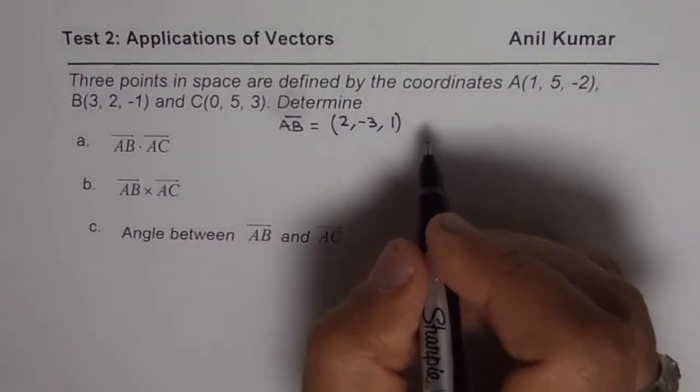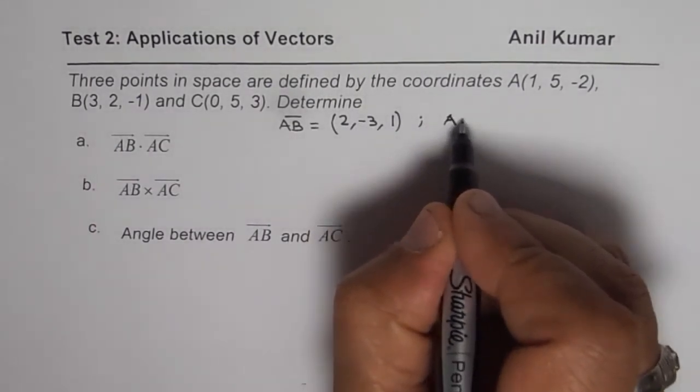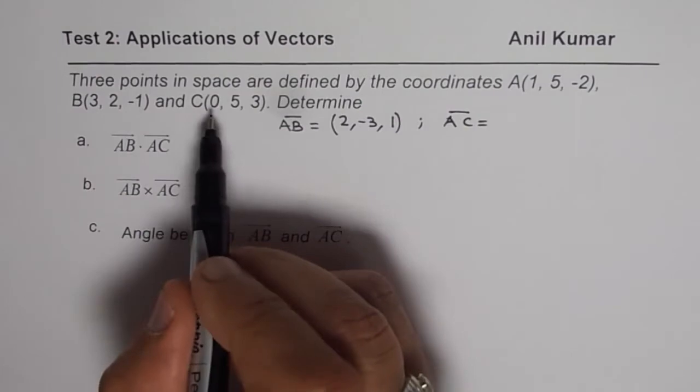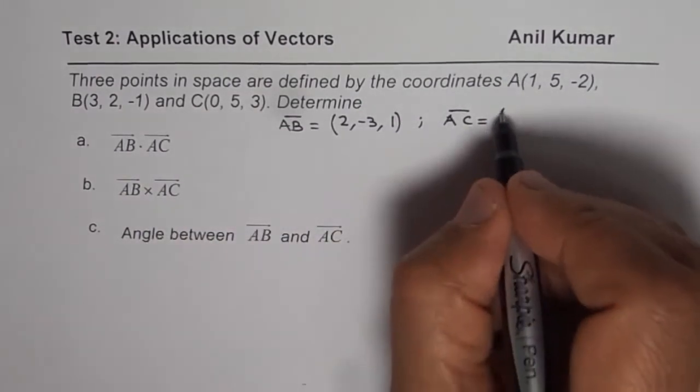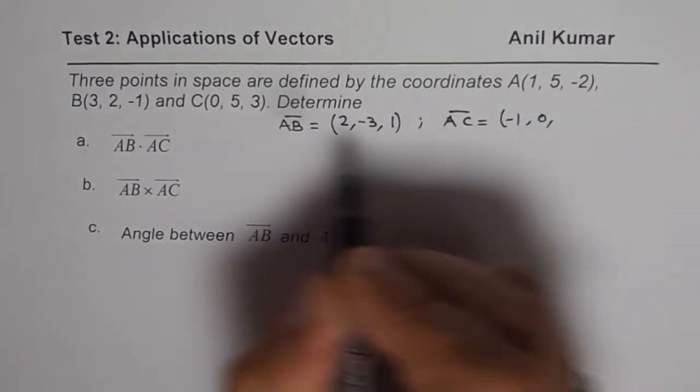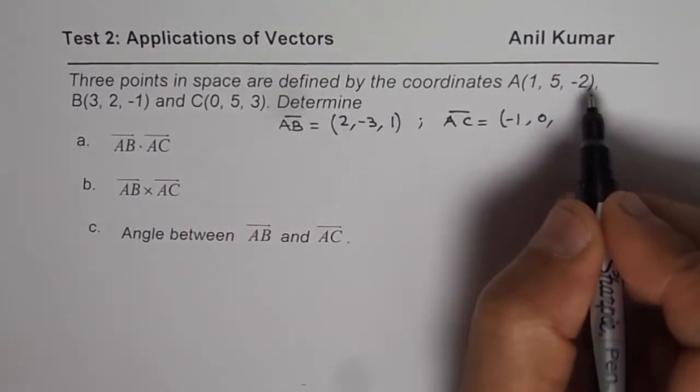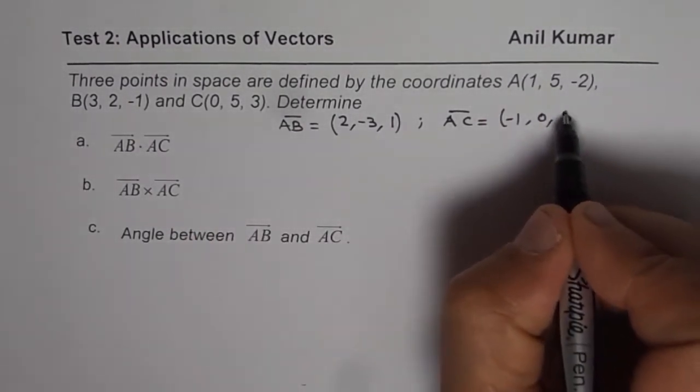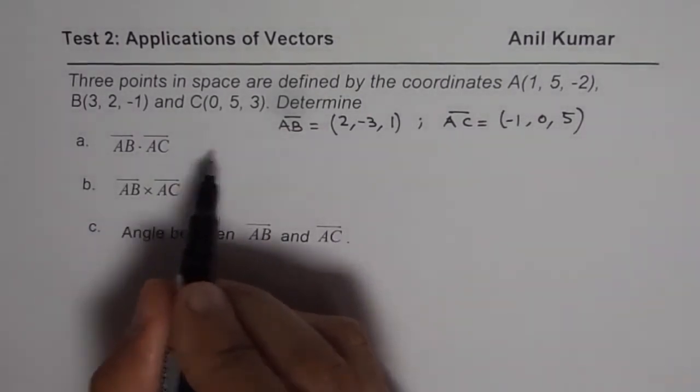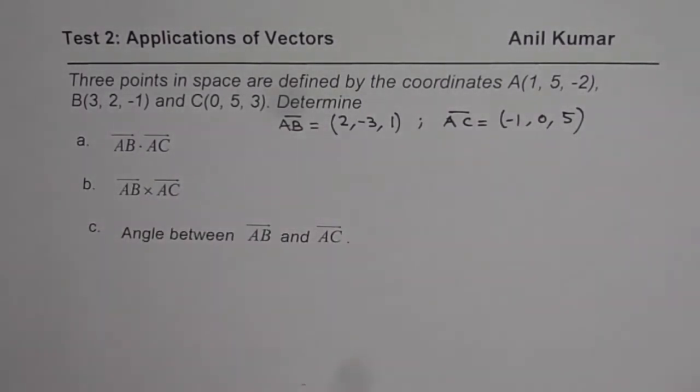Now find what vector AC is. AC will be A to C, that means 0 minus 1, that gives you -1, 5 minus 5 is 0, and 3 minus -2, which is 5. So we have AC as (-1, 0, 5). Now let us find the dot product between these vectors.